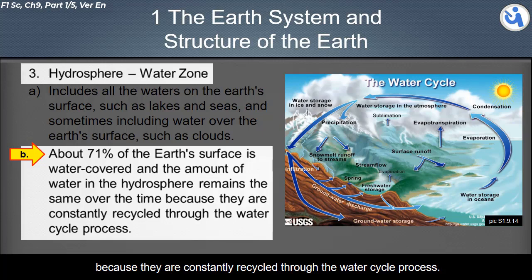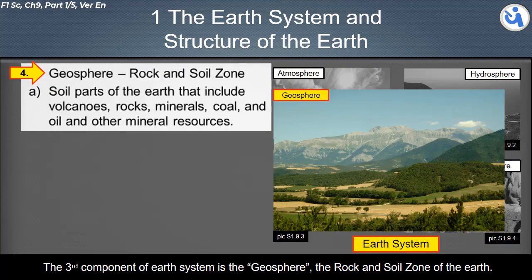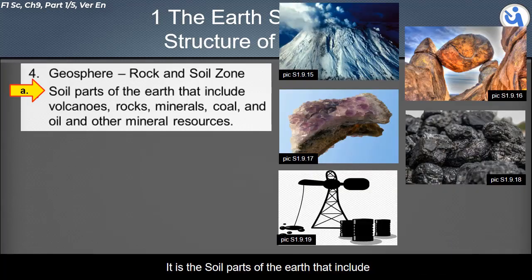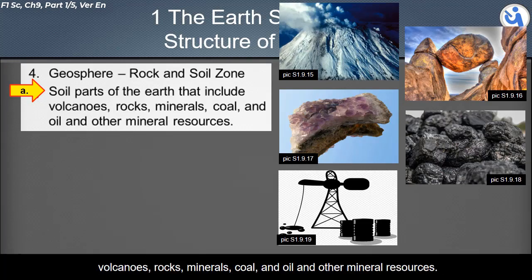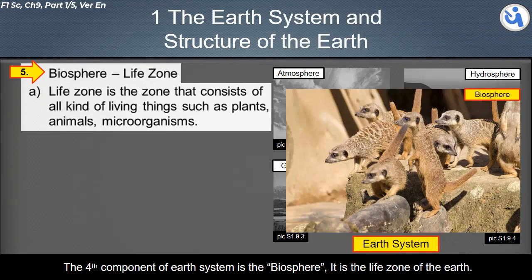The amount of water in the hydrosphere remains the same over time because it is constantly recycled through the water cycle process. The third component of the Earth system is the geosphere — the rock and soil zone of the Earth — which includes volcanoes, rocks, minerals, coal, oil, and other mineral resources.